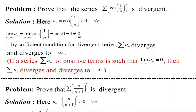Thus the series of positive terms whose nth term is not equal to 0. Therefore, by the sufficient condition for divergent series: if a series Σu_n of positive terms is such that the limit of u_n is not equal to 0, then the series diverges to plus infinity.